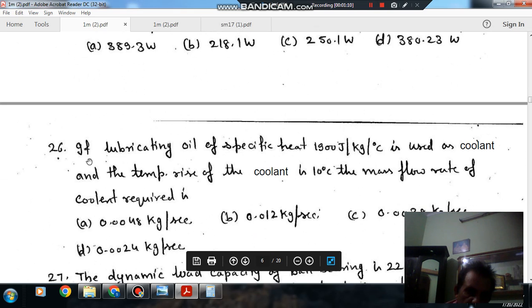Question number 26: If the lubricating oil of specific heat 1900 Joules per kg per degree Celsius is used as coolant, and the temperature rise of the coolant is 10 degrees. Option A 0.048 kg per second, option B 0.012 kg per second, option C 0.0038 kg per second, option D 0.0024 kg per second.